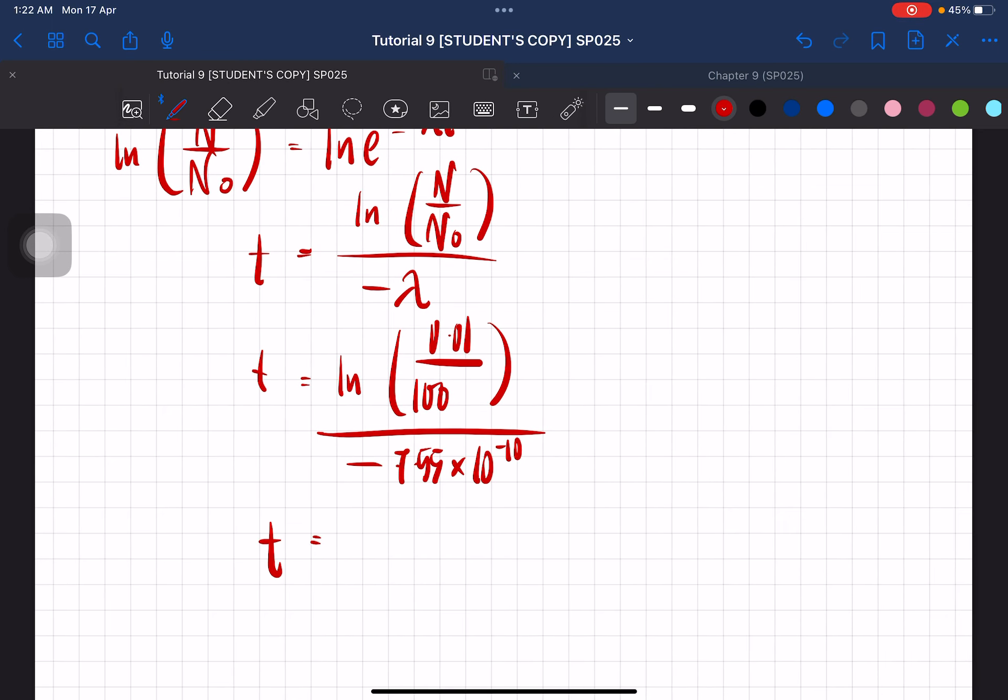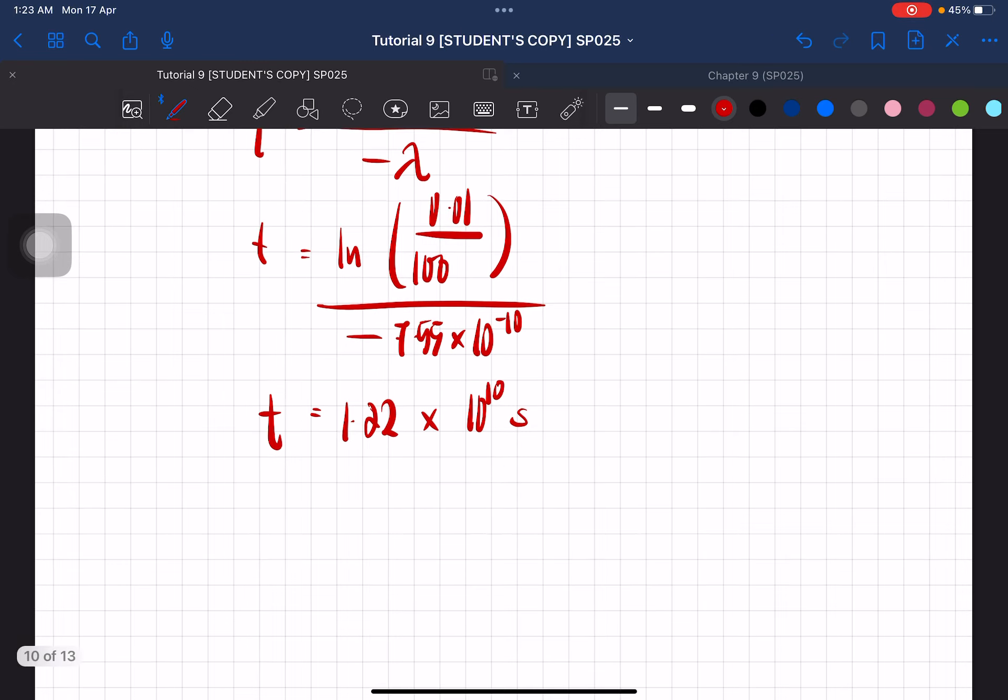So the time is equal to 1.22 times 10 to the power of 10 seconds. So since they want it in years, it's gonna be divided by 60, divided by 60, divided by 24, there is 365 days.